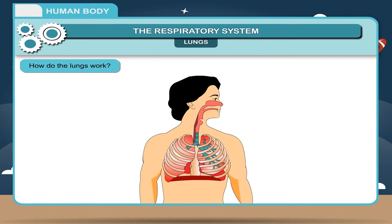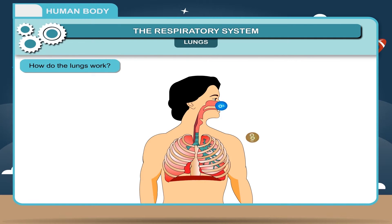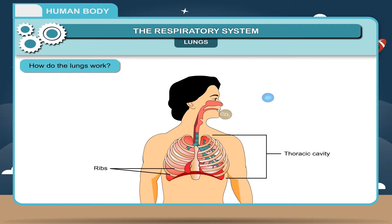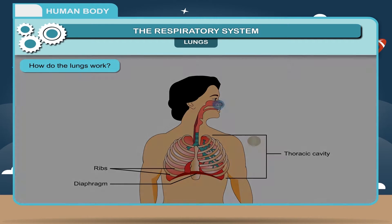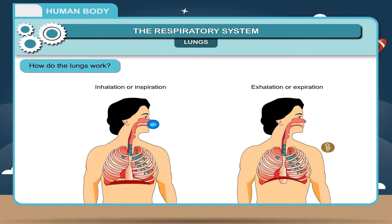How do the lungs work? In humans, respiration is a continuous process. It occurs night and day. Breathing involves inhalation and exhalation. This is carried out by the contraction and relaxation of the thoracic cavity with the help of ribs, muscles, and diaphragm. The diaphragm is a large, dome-shaped muscle that lies just under the lungs. Taking in air rich in oxygen is called inhalation or inspiration, and giving out air rich in carbon dioxide is called exhalation or expiration.